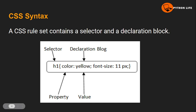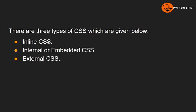The property is followed by a value — for example, yellow or green color. Then you put a semicolon after the value. For example: h1 { color: yellow; font-size: 11px; }. This is the main CSS syntax structure.